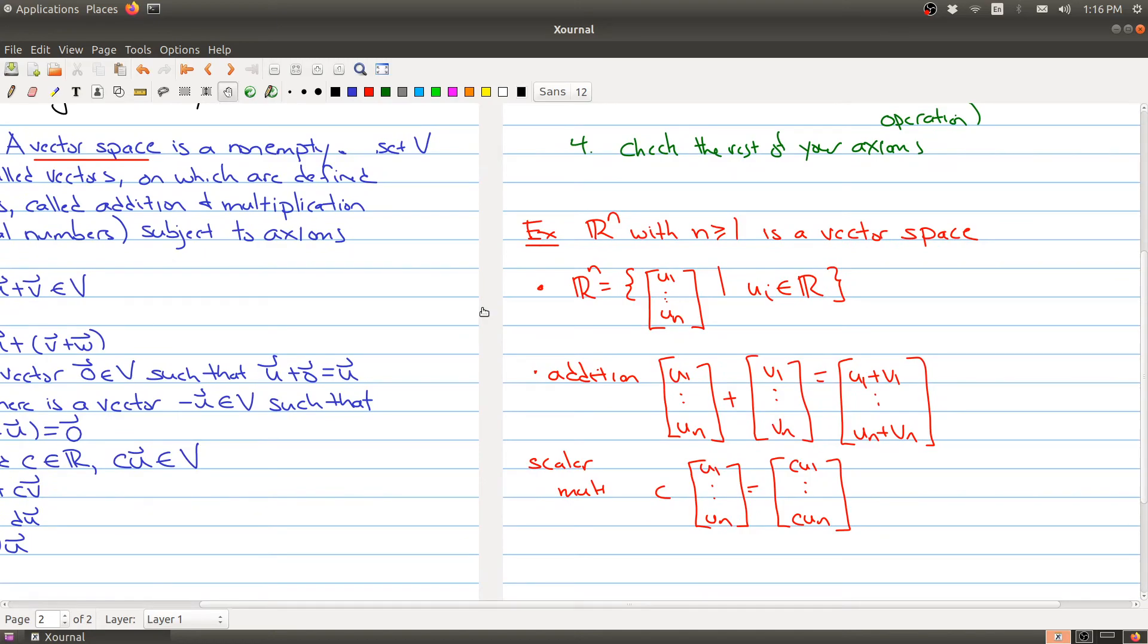And then we have to show that one and six are true, but that's clear. All right. So operations satisfy one and six since the new vectors still in the set Rn. We're just making new vectors in my set Rn.